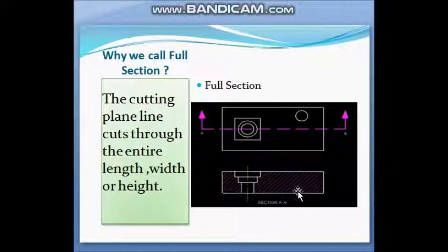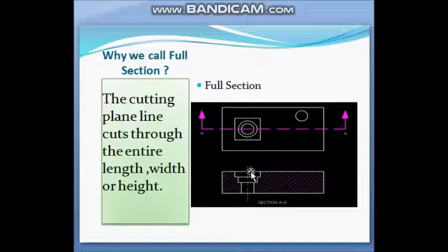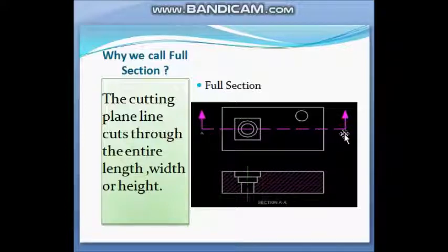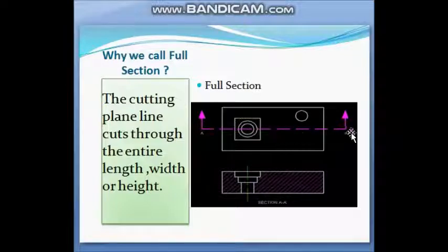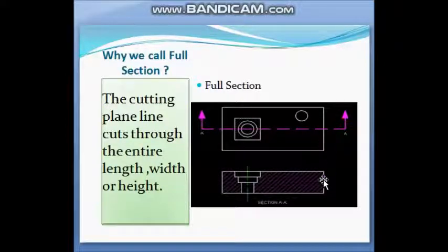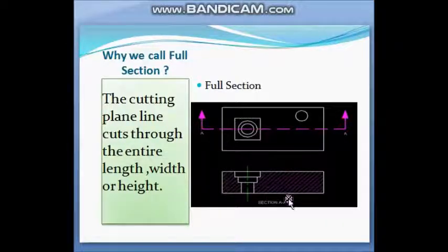First we will see the full sectional view. Full sectional view is drawn through the entire length of the object. This is the cutting plane line, and this arrowhead indicates from where we visualize the object. The cutting plane is drawn from first to last, cutting the total length of the object, and then we draw the hatch line in the sectional part. The section is labeled section A-A.